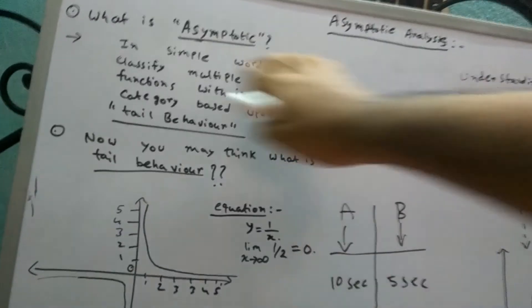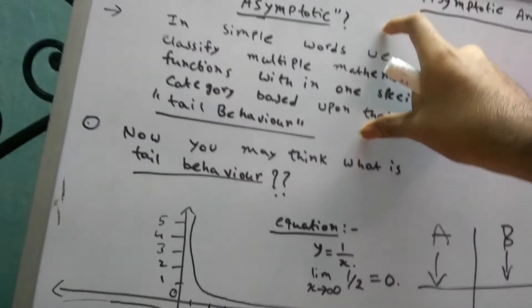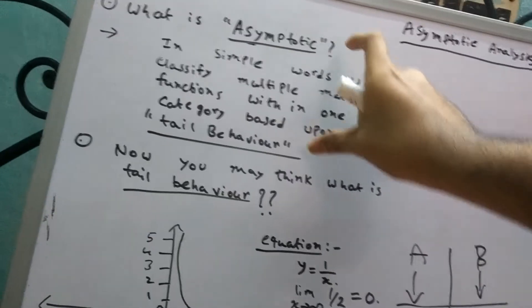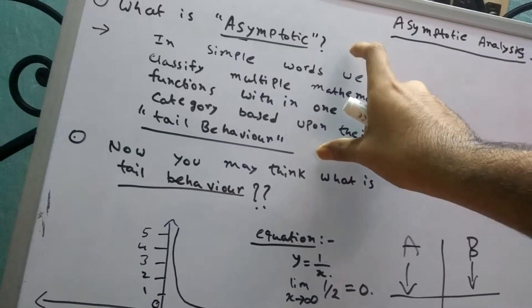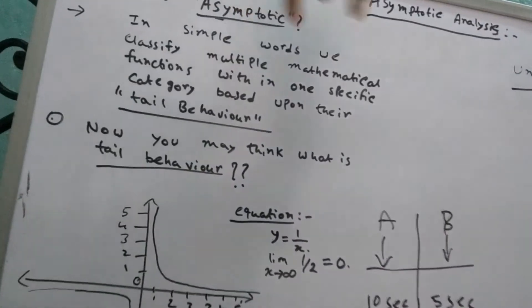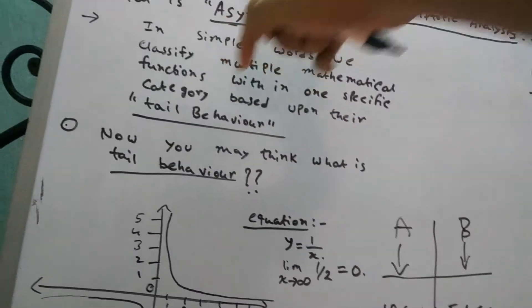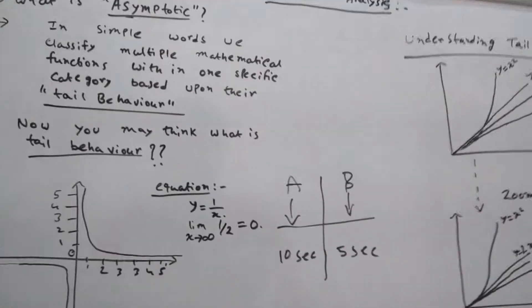To understand asymptotic, we need to get a little mathematical. This is my way of explaining things — you can go to Wikipedia for the formal definition, but this should be more than enough. In simple words: we are classifying multiple mathematical functions within one specific category based on their tail behavior.